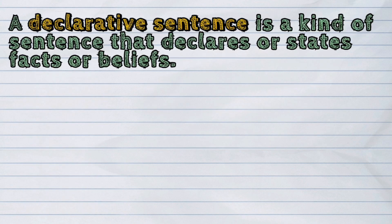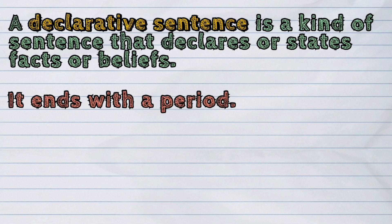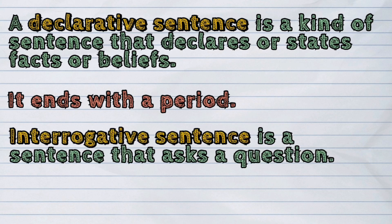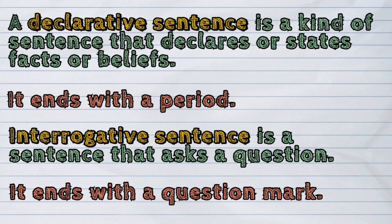The declarative sentence is a kind of sentence that declares or states facts or beliefs, and it ends with a period. While an interrogative sentence is a sentence that asks a question, and it ends with a question mark.